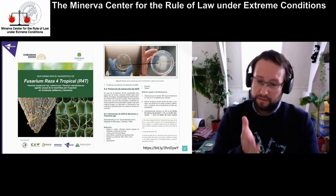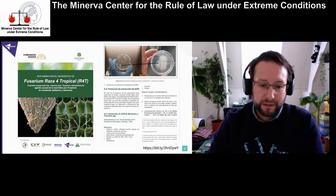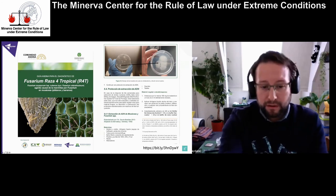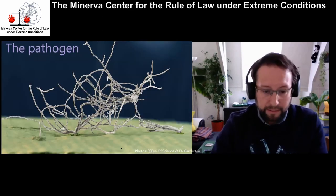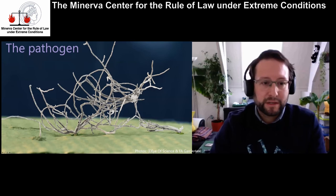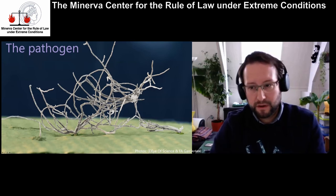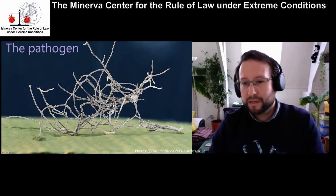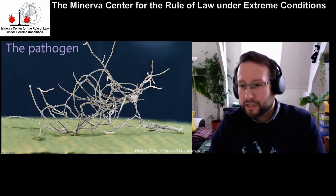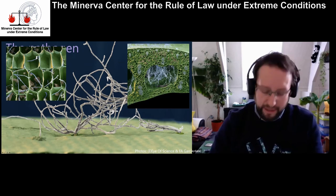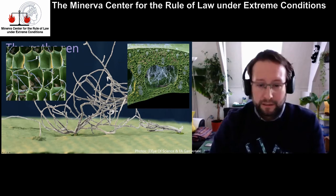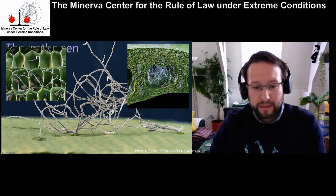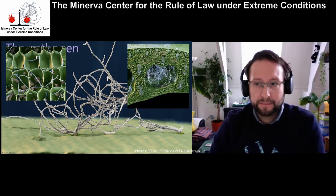The pathogen is a fungus. These are beautiful pictures we made recently — the fungus coming out of the banana plant. These pictures are beautiful but also show how deadly this fungus is. It goes inside the plant and starts to grow, blocking the vascular system. All the white material you see is the fungus growing inside the plant, breaking the cells. These are symptoms — yellowing and wilting in different plantations. This is how it looks inside of the plant.